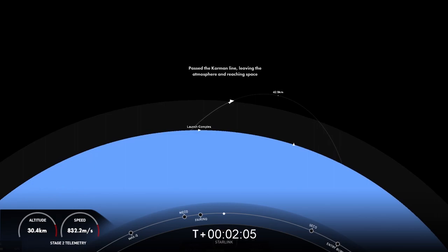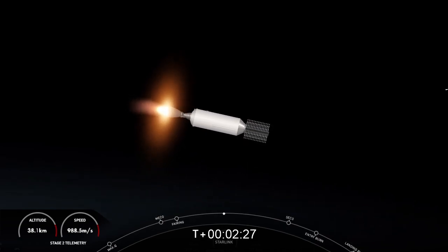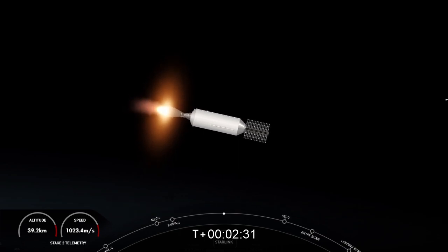So as expected, we got some phenomenal footage of ascent, a couple of views on screen right now. On the left-hand side of your screen is the first stage. It's a view from the top of our first stage looking down. It's heading back to our drone ship in the Pacific Ocean, and on the right-hand side of your screen is a view of that Merlin vacuum engine glowing red-hot, continuing to carry our stack of Starlink satellites to low-Earth orbit.